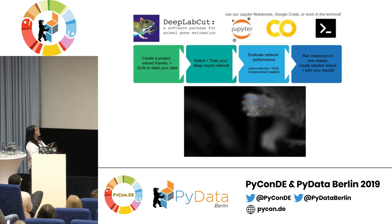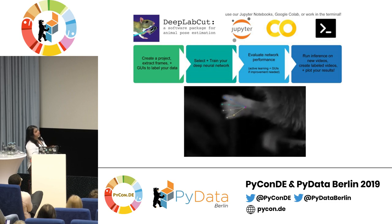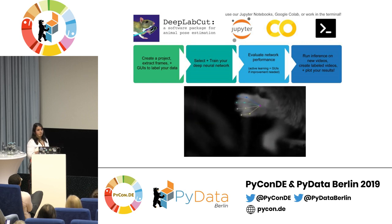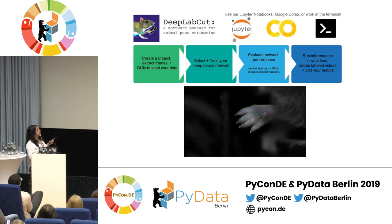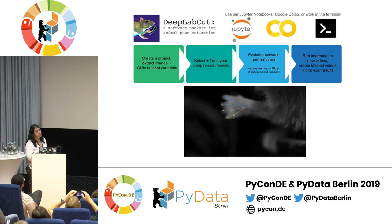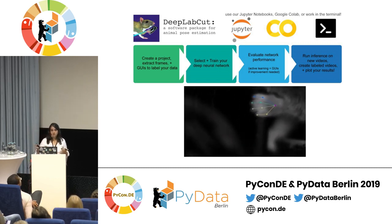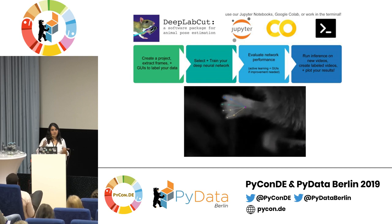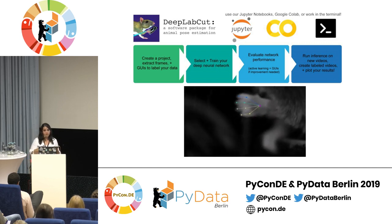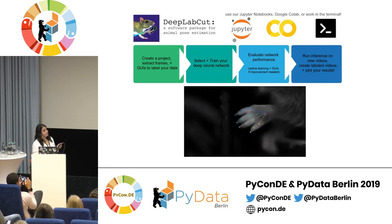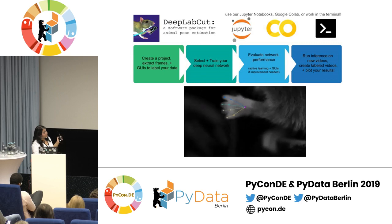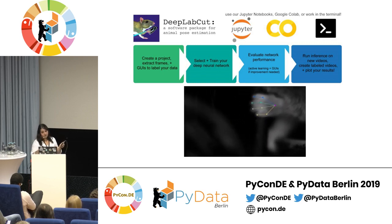With DeepLabCut we created the project, extracted frames from different videos, labeled which points of the pigeons we wanted to track, trained a deep neural network, then checked the network performance on different frames. If there were any misdetections we made corrections. After confirming the tracking was correct for all videos, we analyzed everything with our trained model and plotted the results.